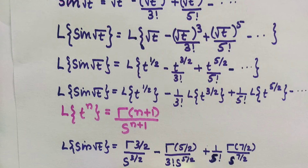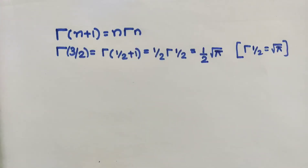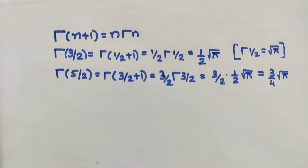Now let's find the values of Γ(3/2) and Γ(5/2). Since Γ(n+1) = n·Γ(n), we have Γ(3/2) = (1/2)·Γ(1/2) = (1/2)√π. Similarly, Γ(5/2) = (3/2)·Γ(3/2) = (3/2)·(1/2)√π = (3/4)√π.